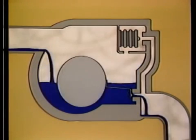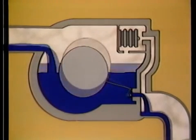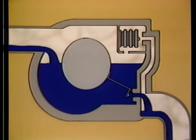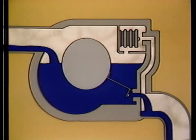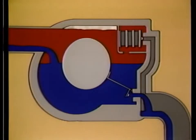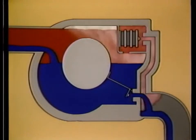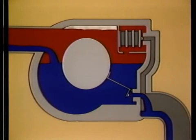The condensate level in the trap lowers and raises the float height, thus modulating the discharge flow. When steam reaches the trap, it collects above the condensate level and heats the thermostatic element, closing its valve. Hereafter, the thermostatic valve will open intermittently to vent mixtures of non-condensibles and steam.